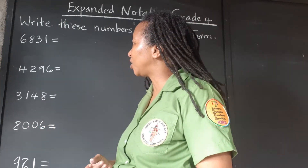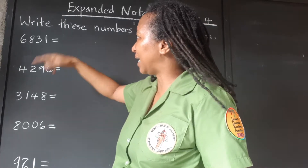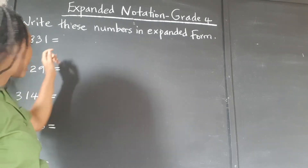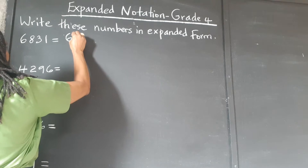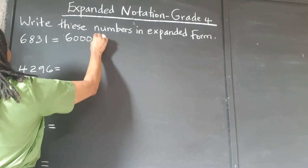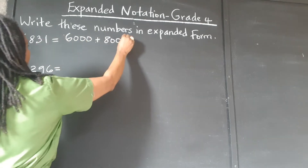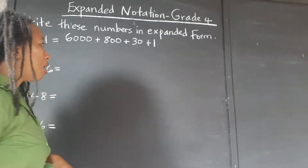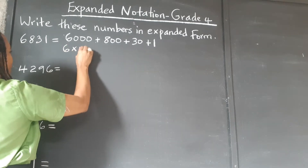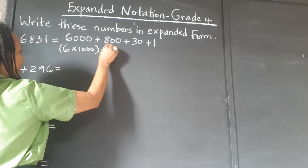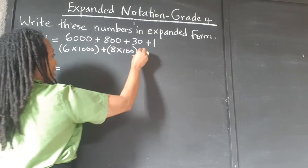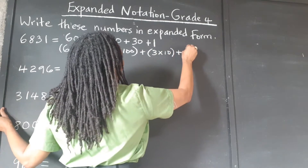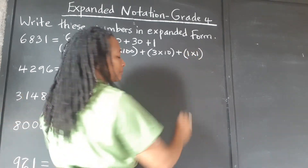You can either just write it as thousands. So let's do an example. This is 6,831. So that's 6,000 plus 800 plus 30 plus 1. Or we can write it as 6 times 1,000 plus 8 times 100 plus 3 times 10 plus 1 times 1.